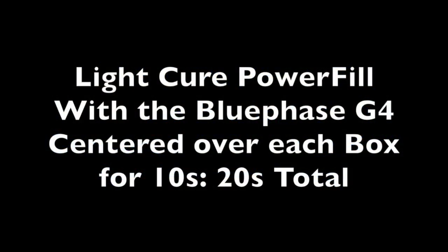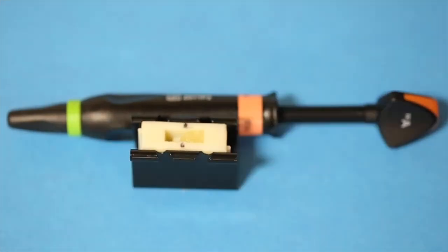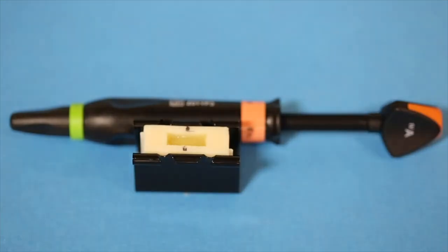Now for a comparison, I'm going to use Tetric Power Fill. Because this is now a monoblock construction of a single increment of composite, I'm not expecting to see any knit lines here.